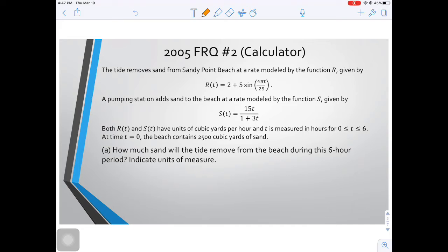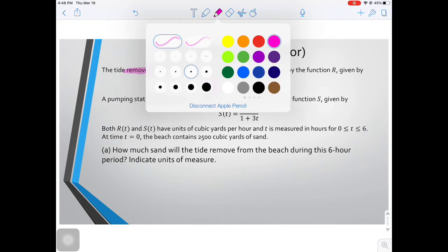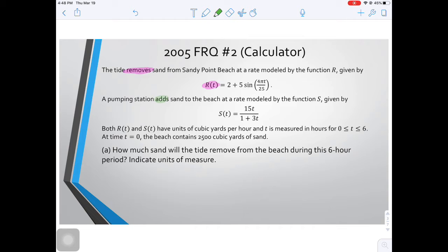A pumping station adds sand to the beach at a rate modeled by the function S, given by that S(t) function. So we have the rate at which sand is being removed, which is R(t), and the rate at which sand is being added, which is S(t). Both R(t) and S(t) have units of cubic yards per hour and t is measured in hours from 0 to 6. At time t equals 0, the beach contains 2500 cubic yards of sand.